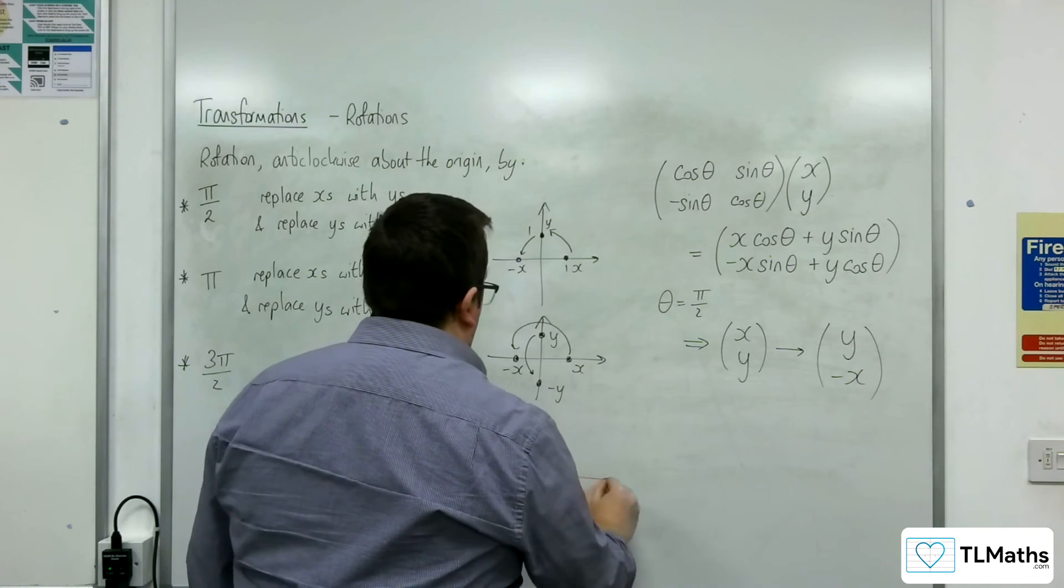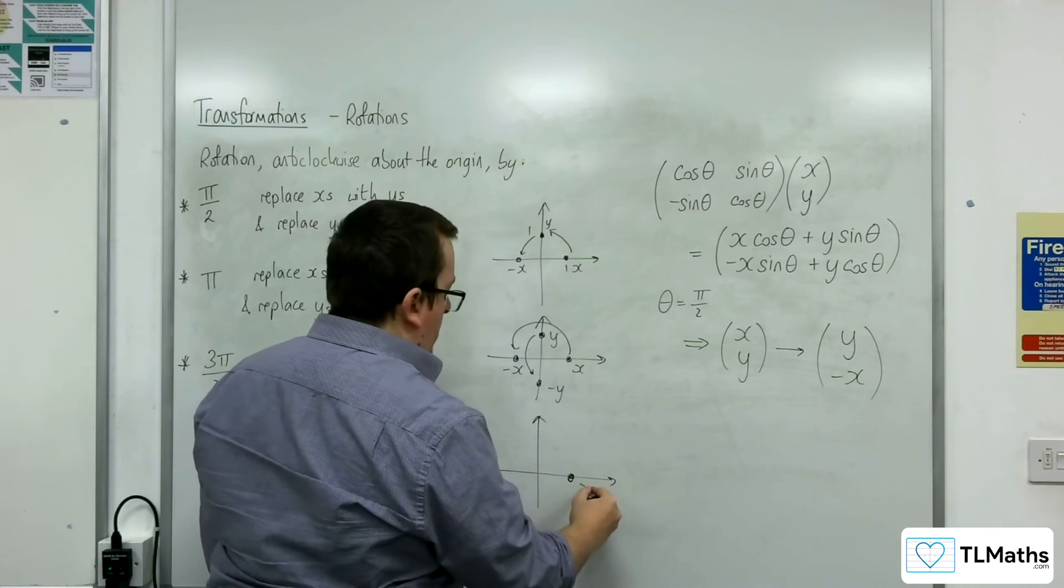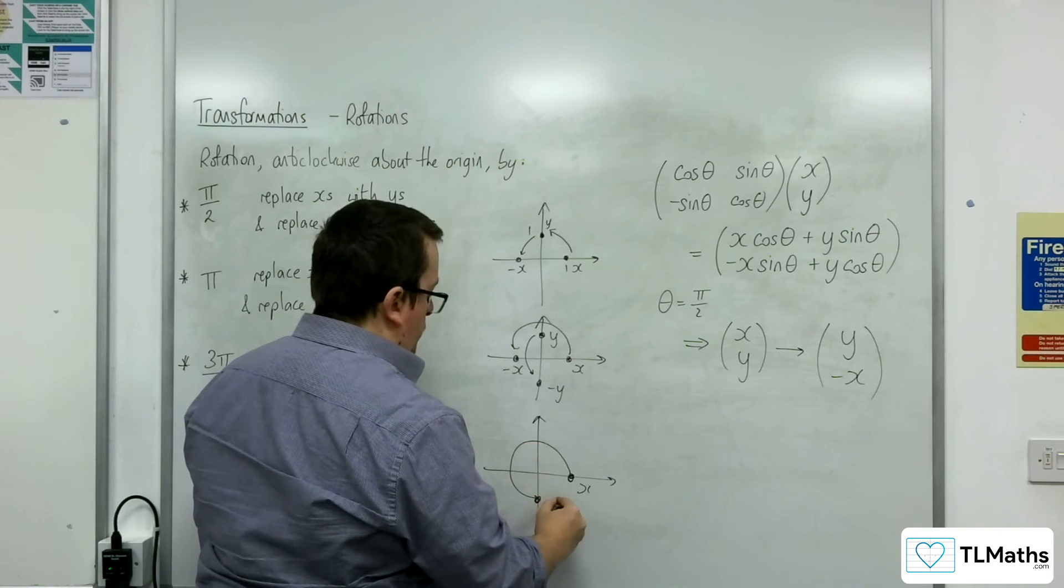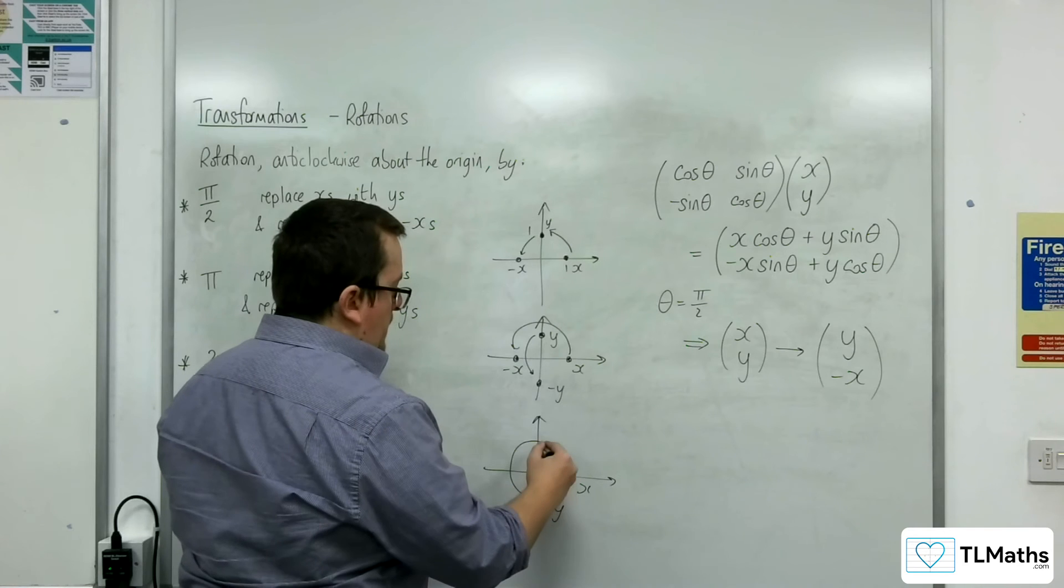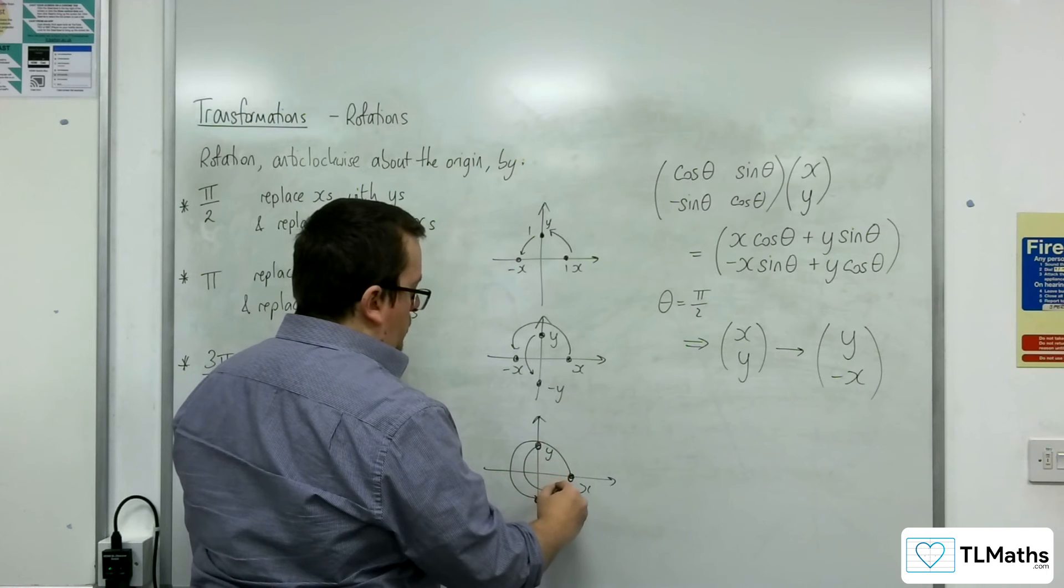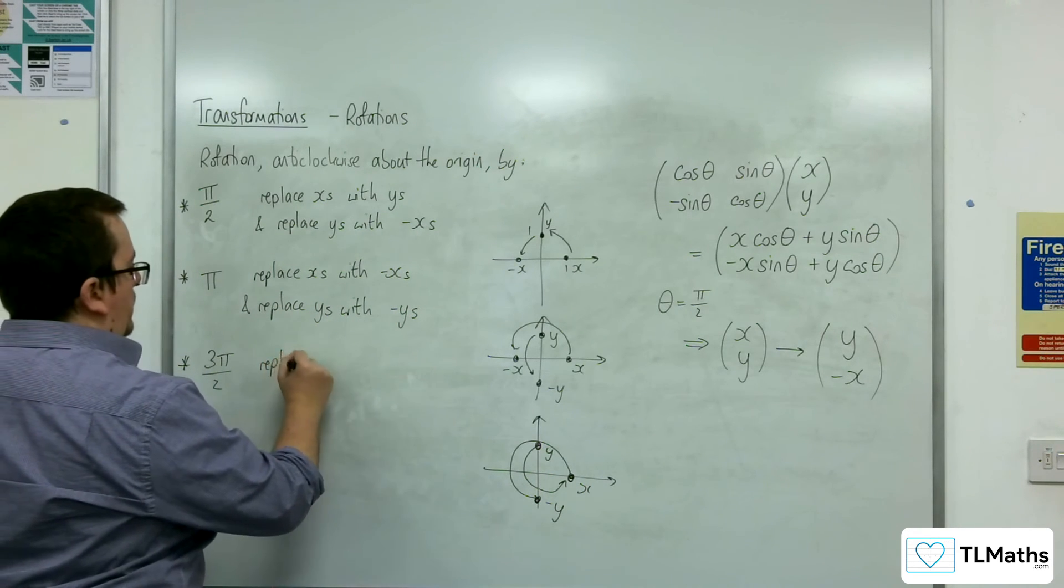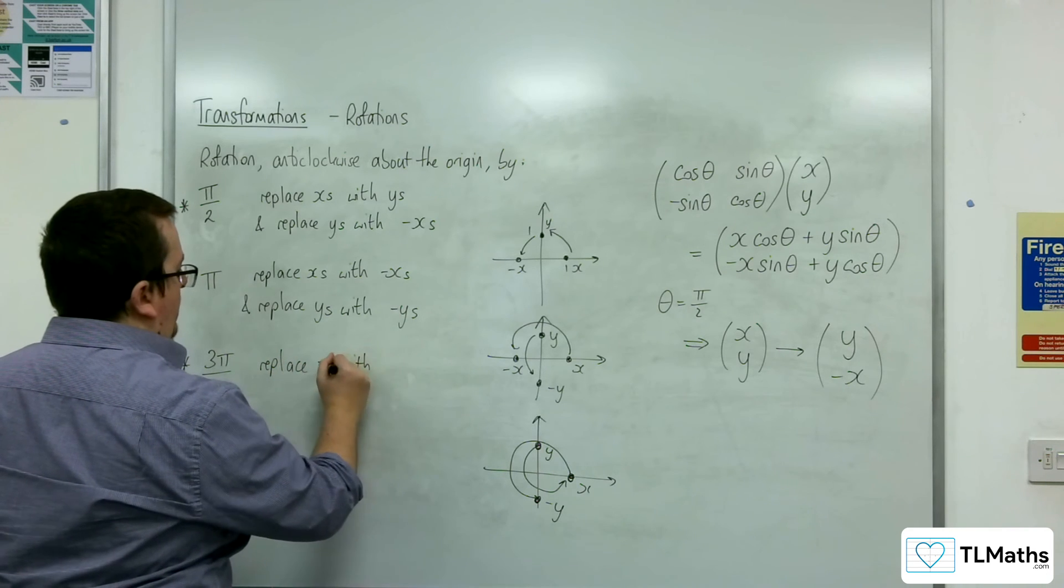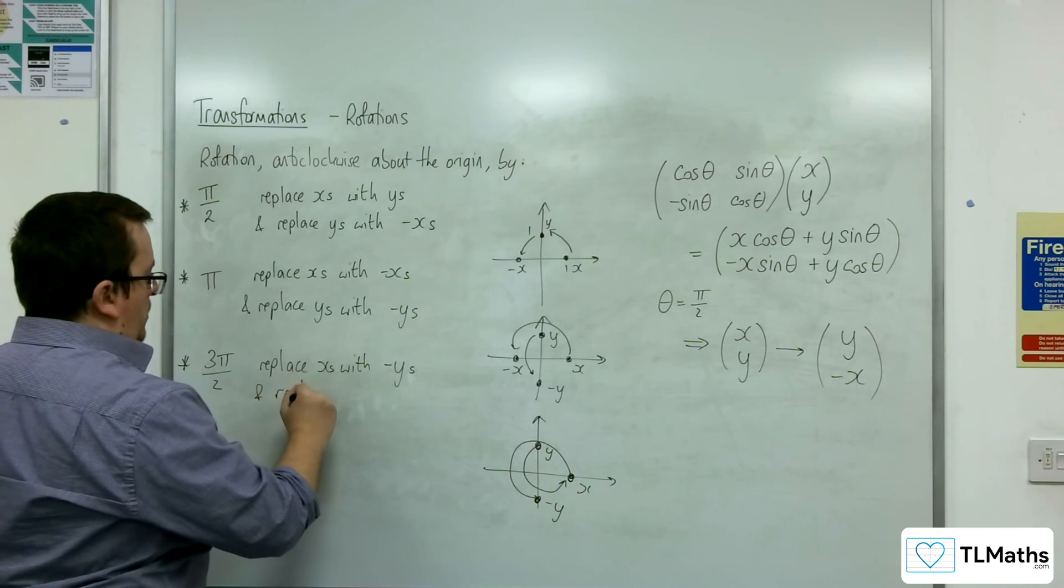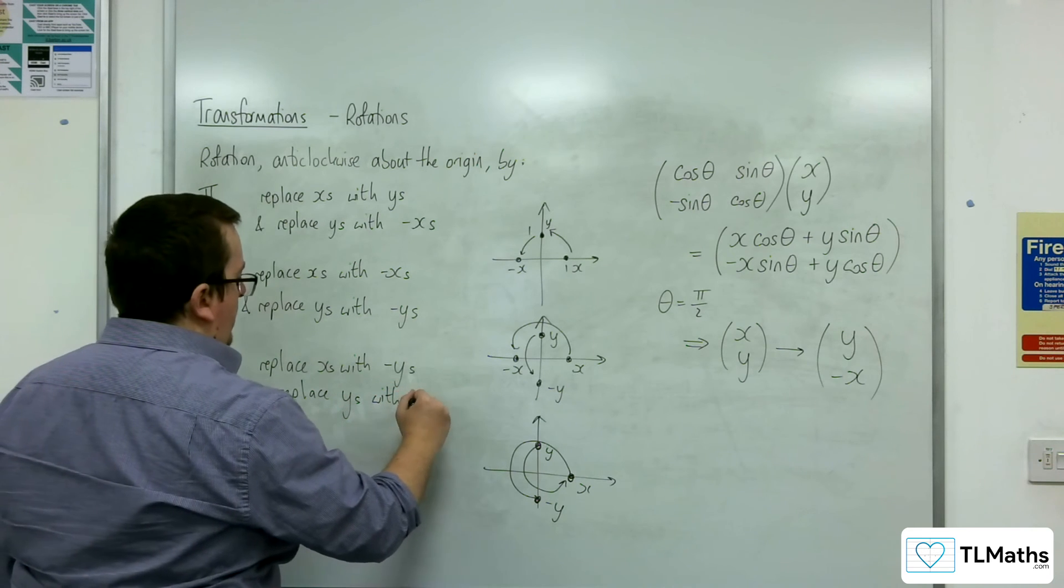And if we want to do 3 pi over 2, then our x is going to go all the way around here to this point, which is minus y. And y's going to go all the way around here to this point, which is x. So we would replace x's with minus y's, and replace y's with x's.